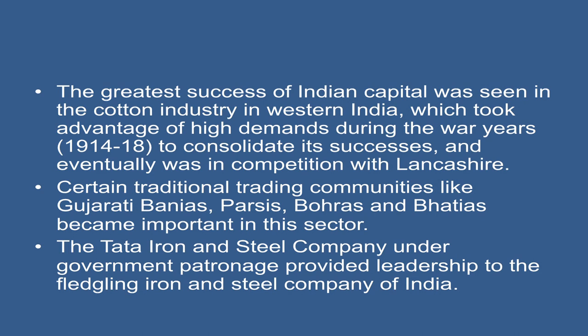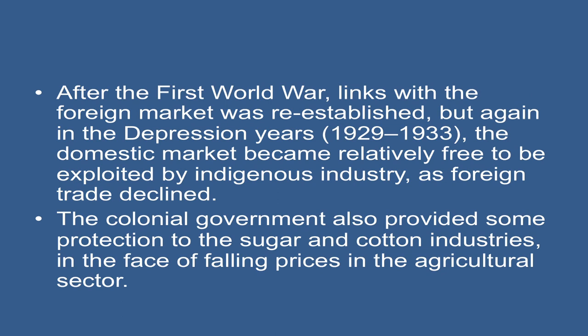Certain traditional trading communities, like the Gujarati Baniyas, the Parsis, the Bohras, and Bhatias, became important in this sector. The Tata Iron and Steel Company, under government patronage, provided leadership to the fledgling iron and steel industry of India. After the First World War, links with the foreign market were re-established. But again, in the depression years from 1929 to 1933, the domestic market became relatively free to be exploited by indigenous industry as foreign trade declined.